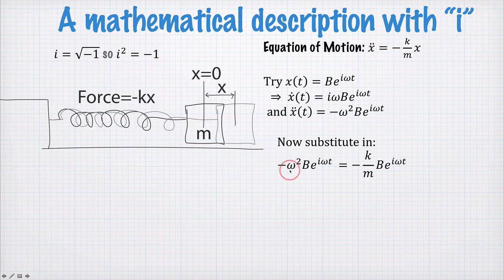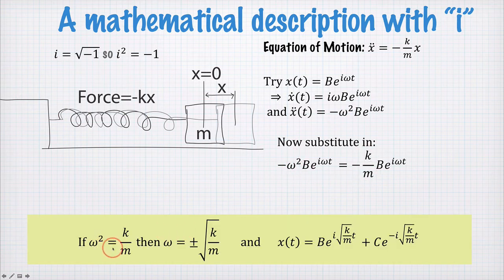Everything looks the same, so omega squared must be equal to k on m. So if omega squared is equal to k on m, then omega is equal to plus or minus k on m. So this is where the point of difference comes, is we're going to take omega is plus or minus k on m.